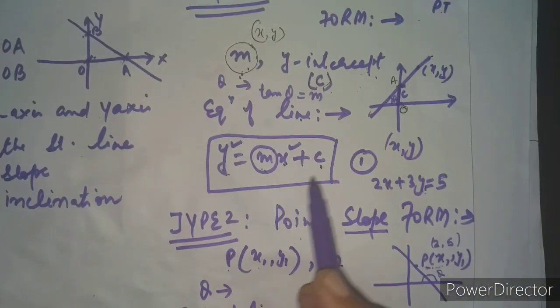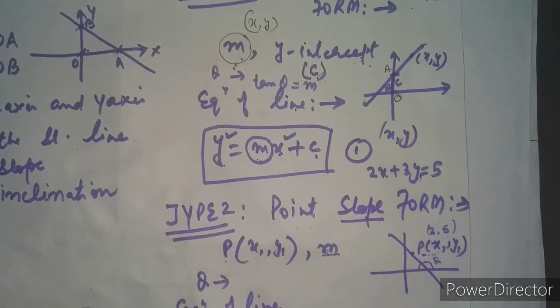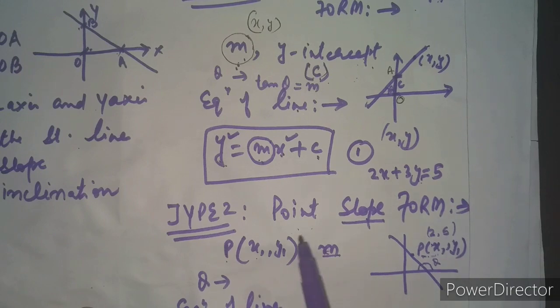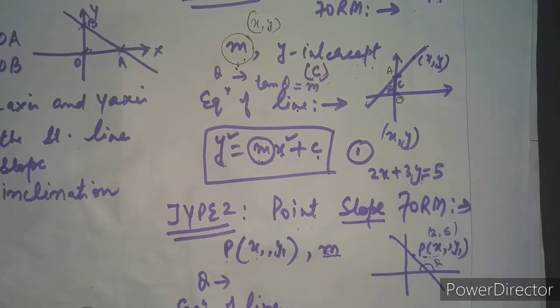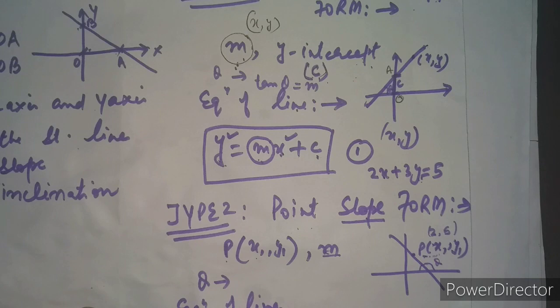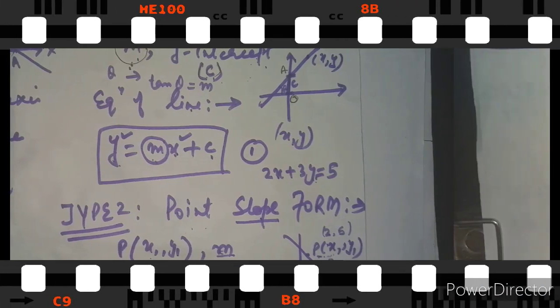So this is our second type. To recap: the first type is the slope-intercept form with formula y = mx + c. The second form is the point-slope form with equation y − y₁ = m(x − x₁).